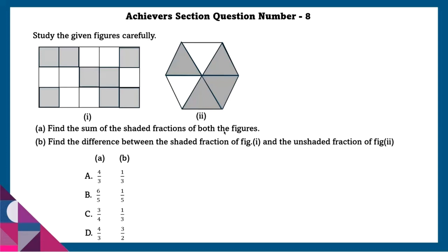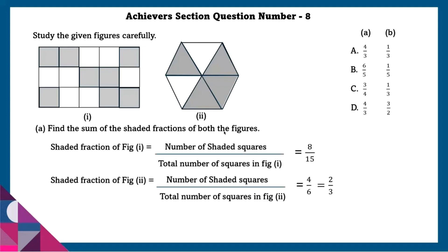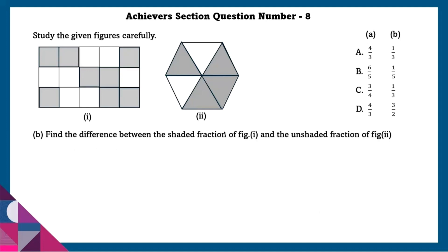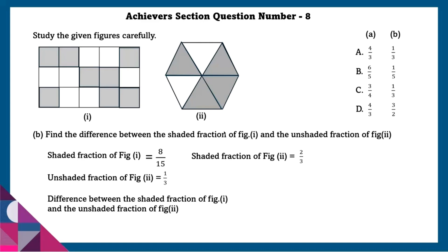Achieve section question number 8: Study the given figures carefully. Part A1: find the sum of shaded fractions of both figures. Shaded fraction of figure 1 is 8 by 15, and shaded fraction of figure 2 is 2 by 3. Sum of shaded fractions is 8 by 15 plus 2 by 3, which equals 6 by 5. Part B: find the difference between the shaded fraction of figure 1 and the unshaded fraction of figure 2. Shaded fraction of figure 1 is 8 by 15; unshaded fraction of figure 2 is 1 by 3. The difference is 1 by 5. So the answer is option B.